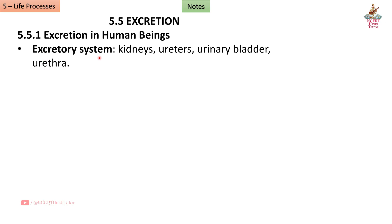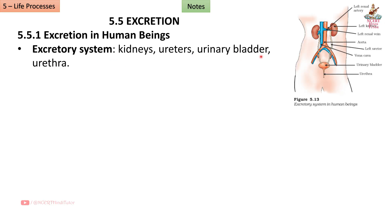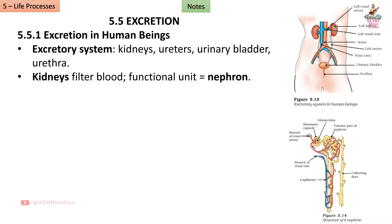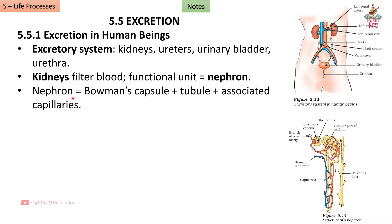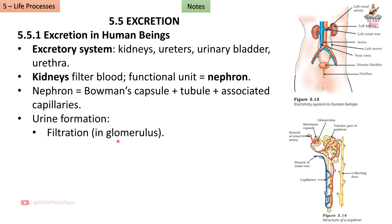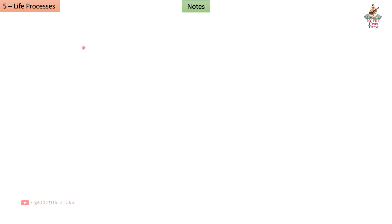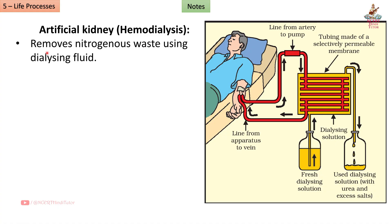Section 5.5.1: Excretion in Human Beings. The excretory system consists of kidneys, ureters, urinary bladder, and urethra. Kidneys filter blood; the functional unit is the nephron, consisting of Bowman's capsule and tubules. Urine formation involves three steps: filtration in the glomerulus, reabsorption of water, glucose, and salts, and secretion of waste into the tubule. Urine is stored in the bladder and excreted through the urethra.